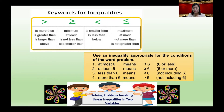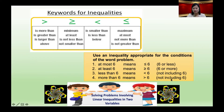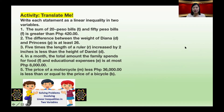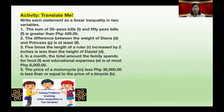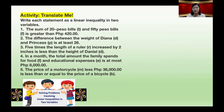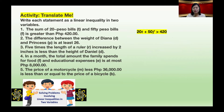Let's have this Translate Me activity — write each statement as a linear inequality in two variables. Number one: the sum of 20-peso bills T and 50-peso bills F is greater than 420 pesos. The answer: 20T plus 50F is greater than 420.